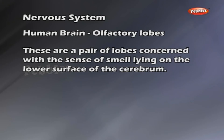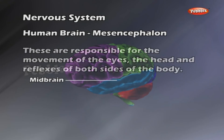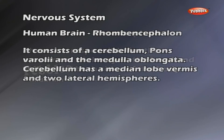Mesencephalon, midbrain: Consists of four spherical bodies called corpora quadrigemina. These are responsible for the movement of the eyes, the head, and the reflexes of both sides of the body.